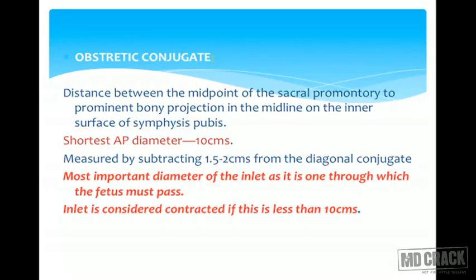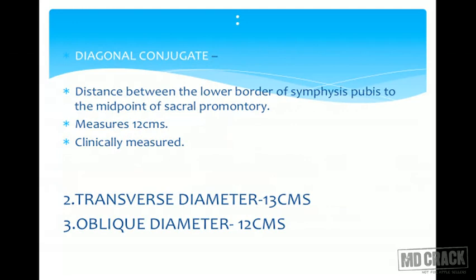The obstetric conjugate is the most important diameter of the inlet as the fetus must pass through it; inlet is considered contracted if obstetric conjugate is less than 10 cm. The diagonal conjugate is what we actually measure clinically — distance from lower border of symphysis pubis to midpoint of sacral promontory. If promontory is not felt, diagonal conjugate is adequate; if felt, the distance is measured. It measures 12 cm. Transverse diameter of inlet is 13 cm and oblique is 12 cm.